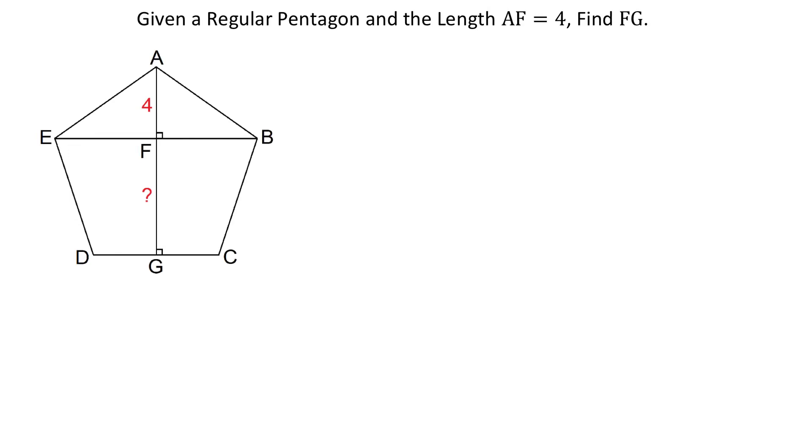In this figure, we have a regular pentagon and the line segment AG is perpendicular to the side DC. AF equals 4 units and we have to find FG. To find FG, first we will find AG, then we will subtract 4 and we will get FG.